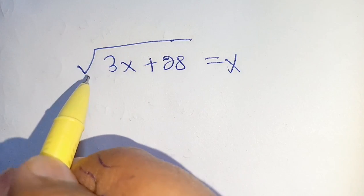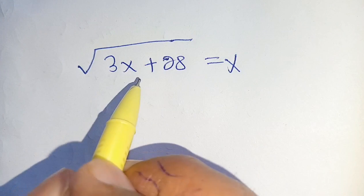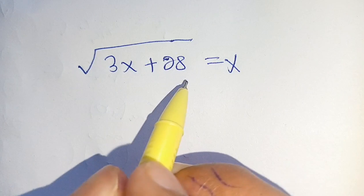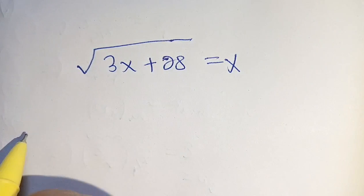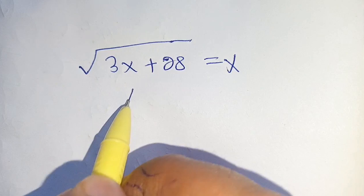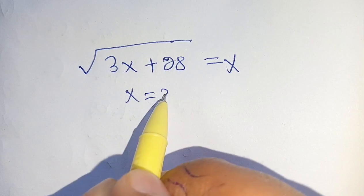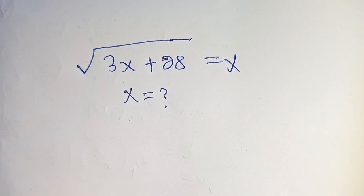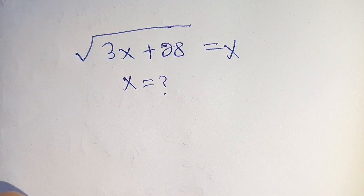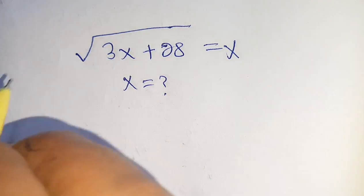Hello everyone. How to simplify: square root of 3 of x plus 28 is equal to x, and we have to find the value of x which satisfies this equation. Let us solve this.